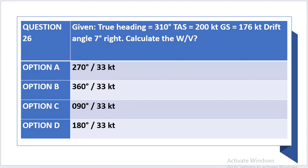The question states: given true heading is equal to 310 degrees, TAS is equal to 200 knots, ground speed 176 knots, and drift angle 7 degrees right — calculate the wind velocity.